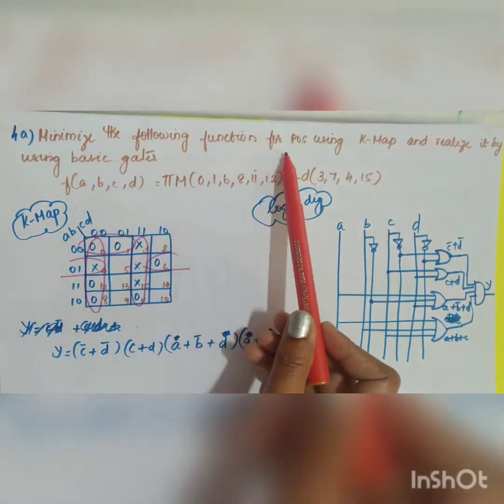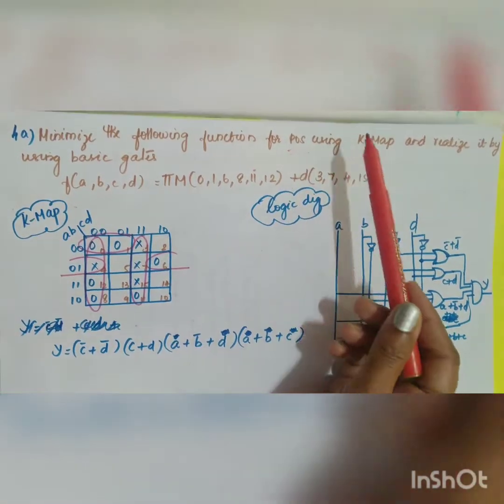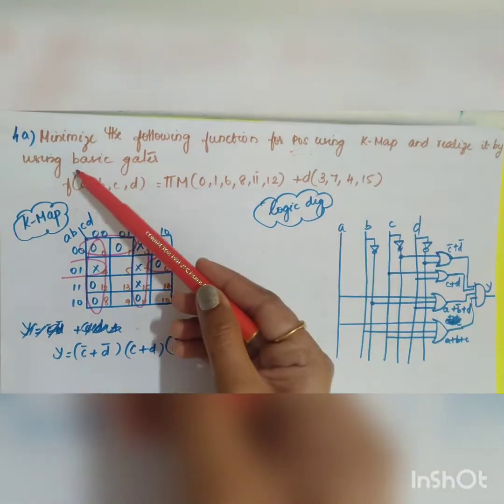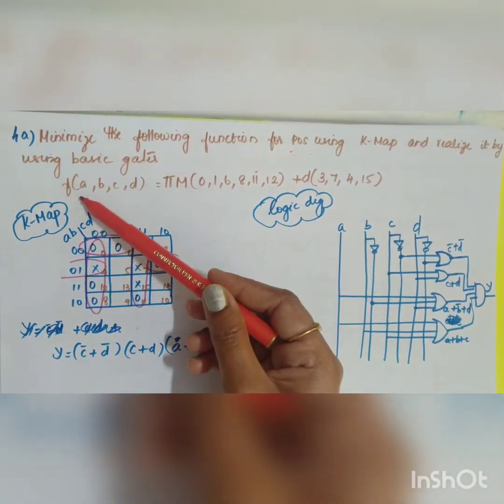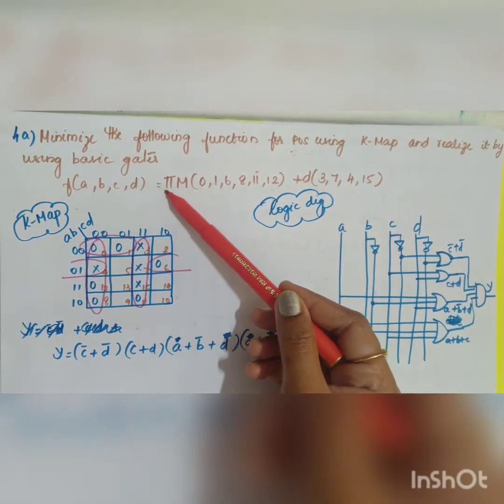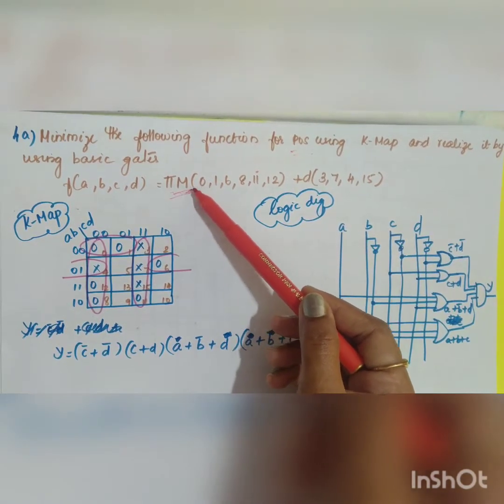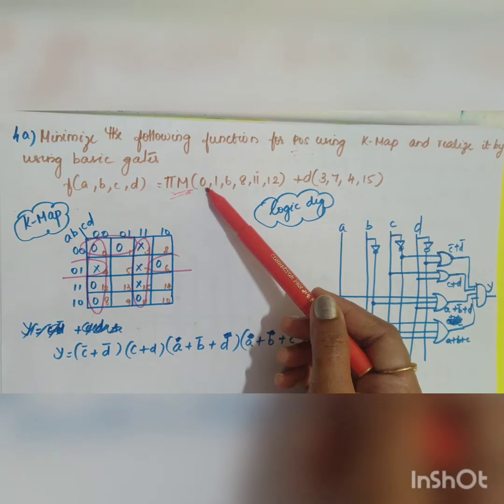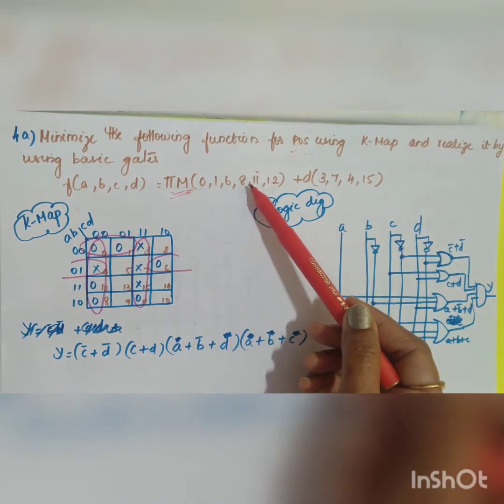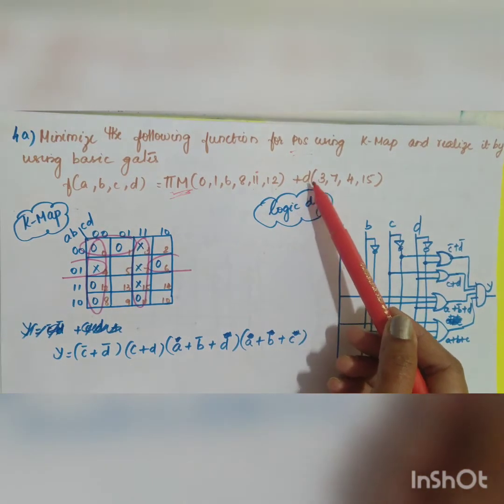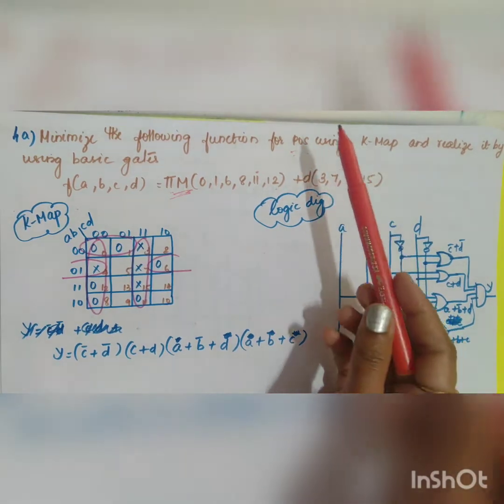Your next question is minimize the following function for product of sum using K map and realize it by using basic gates. f of a comma b comma c comma d is equal to pi m, product of sum product of max terms is equal of 0 comma 1 comma 6 comma 8 comma 11 comma 12 and d of 3 comma 7 comma 4 comma 15.